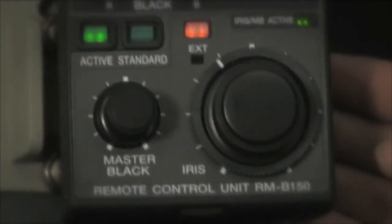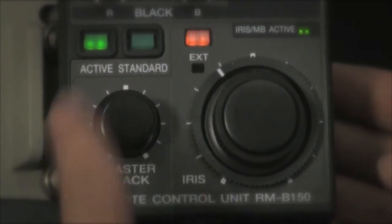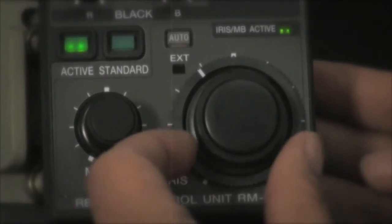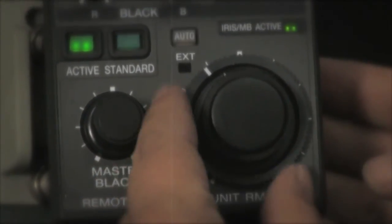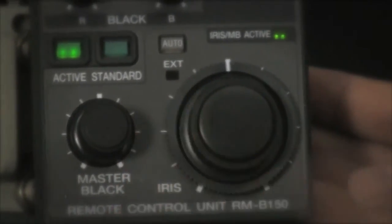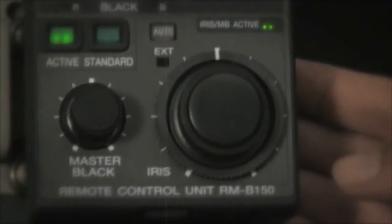On the bottom portion of the unit, you can control your iris and your master black. You toggle between auto and manual using this button here. When you're in a manual iris, you can then adjust the amount of light coming through and you can use this outer ring as a memory indicator of where your iris is set. You can also adjust the contrast by adjusting your master blacks up or down.